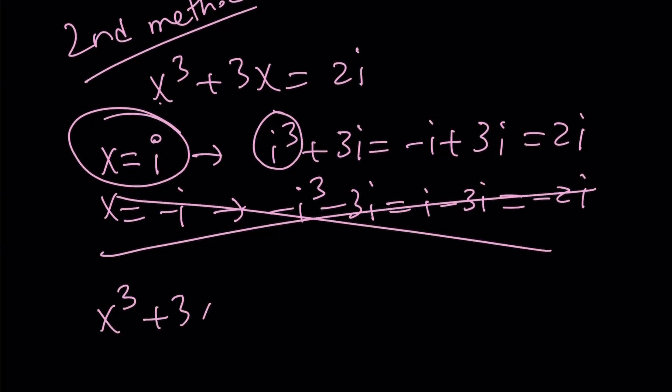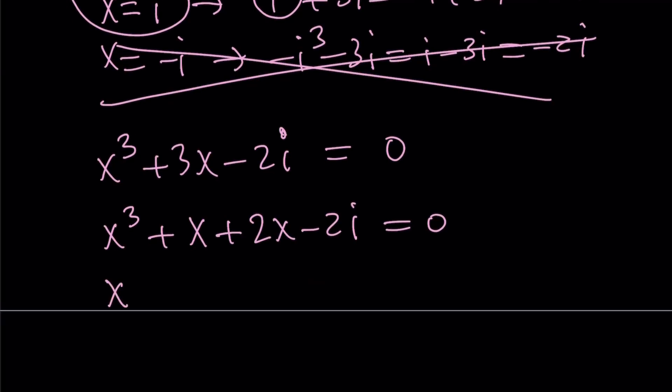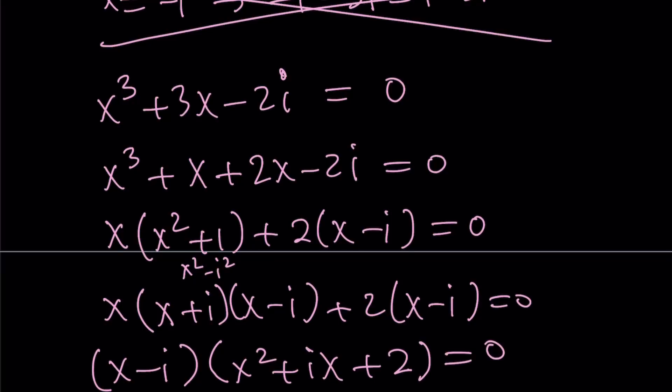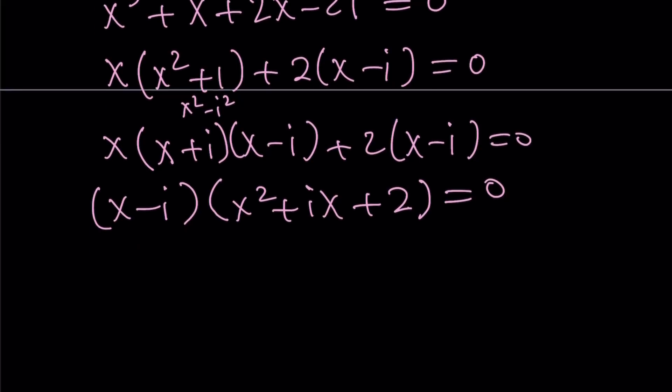So this part is also kind of cool, because I'm going to show you without long division. Obviously you can do long division, you can do all sorts of things, but since I know one of the solutions, I can do the following. So let me go ahead and break down 3x into x plus 2x. This is cool in many ways. Take out x and take out 2. Now, who said that sum of 2 squares cannot be factored? Well, not in the real world, but in the complex world, everything is possible. And I can write this as x plus i times x minus i, because x squared minus i squared is x squared plus 1. So here we get a common factor, which is really nice. And we can take out x minus i. And from there, we get x squared plus ix plus 2 is equal to 0.